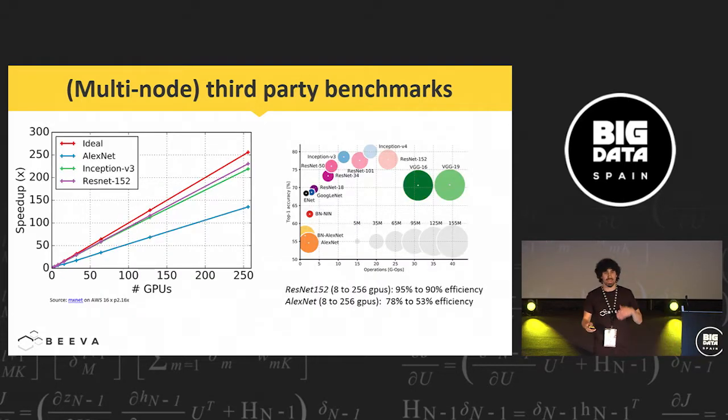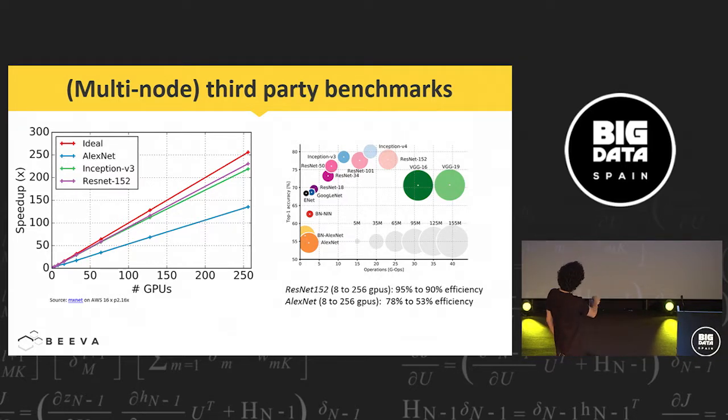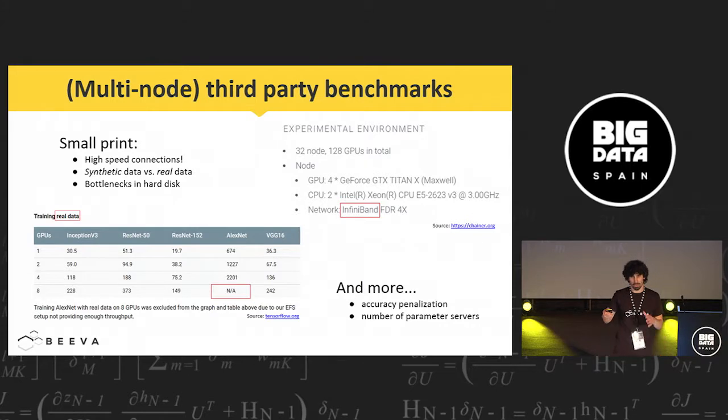Then I started to look at other benchmarks from different frameworks. This is from MXNet. In this case, we can see that different models have very different behaviors. These ones, Inception ResNet, are not bad. But in this case of AlexNet, our efficiency decayment or degradation is like only 50%. I wouldn't consider that 50% of efficiency when scaling our training is good or very good. So what's happening?